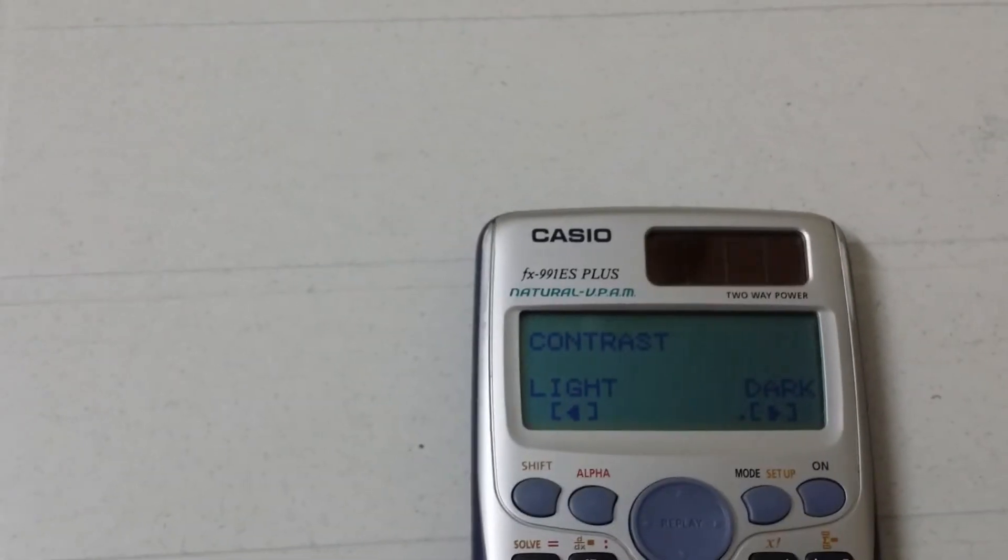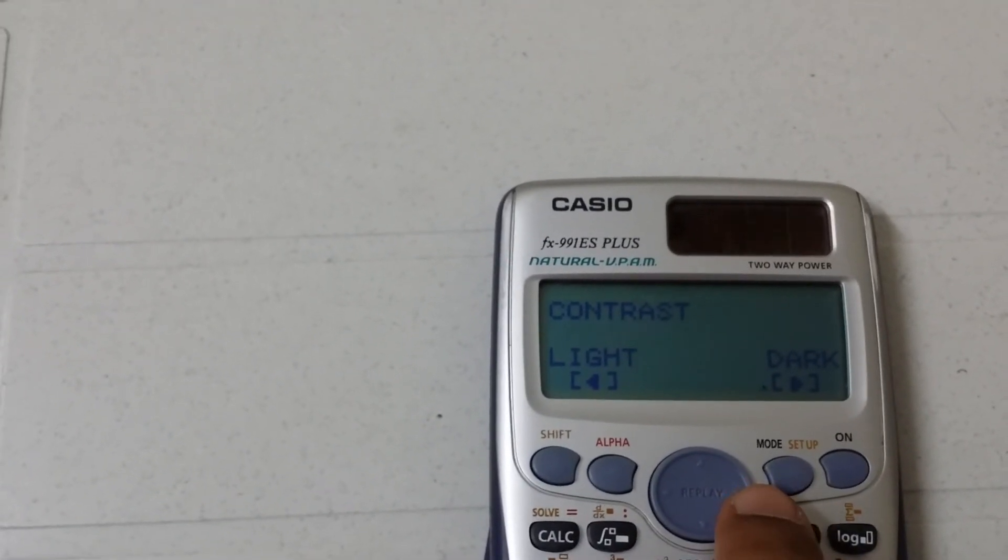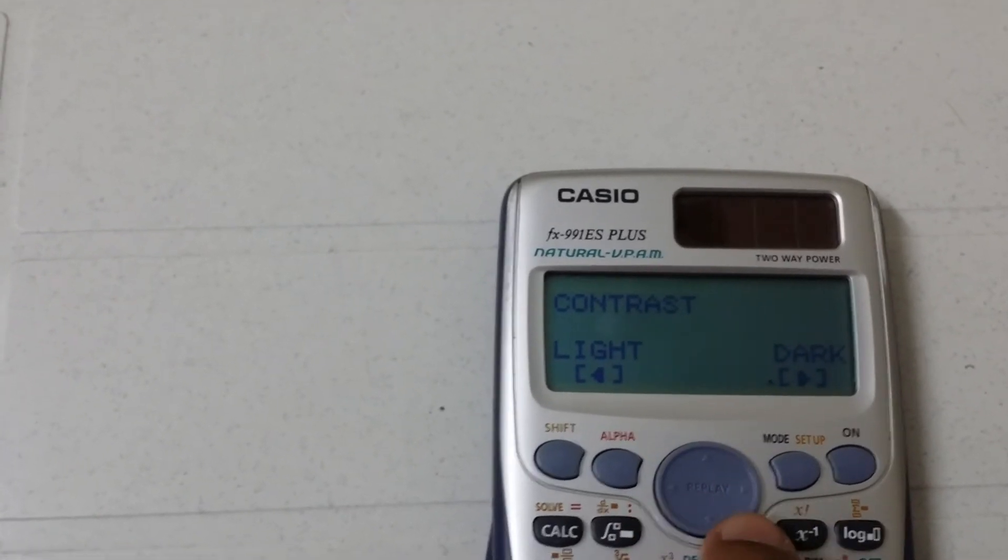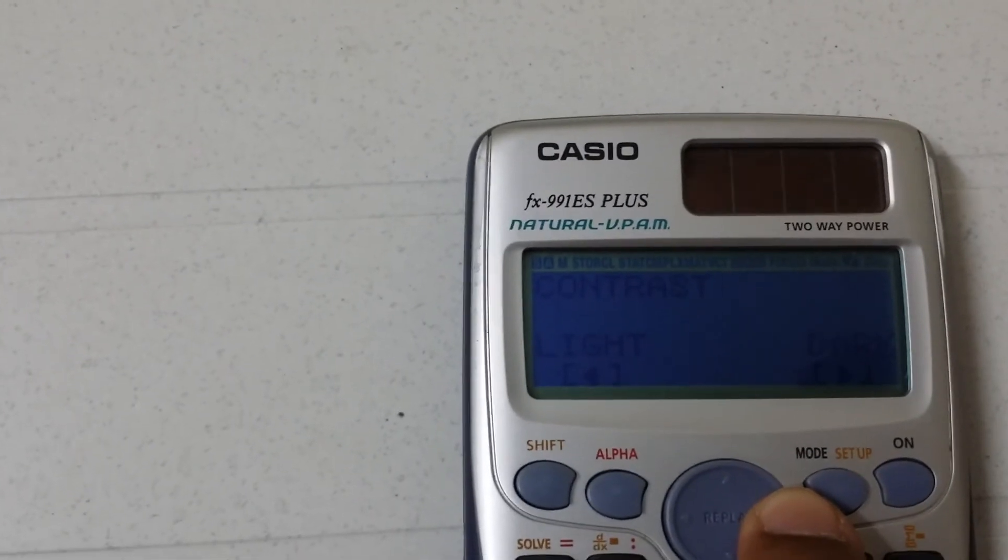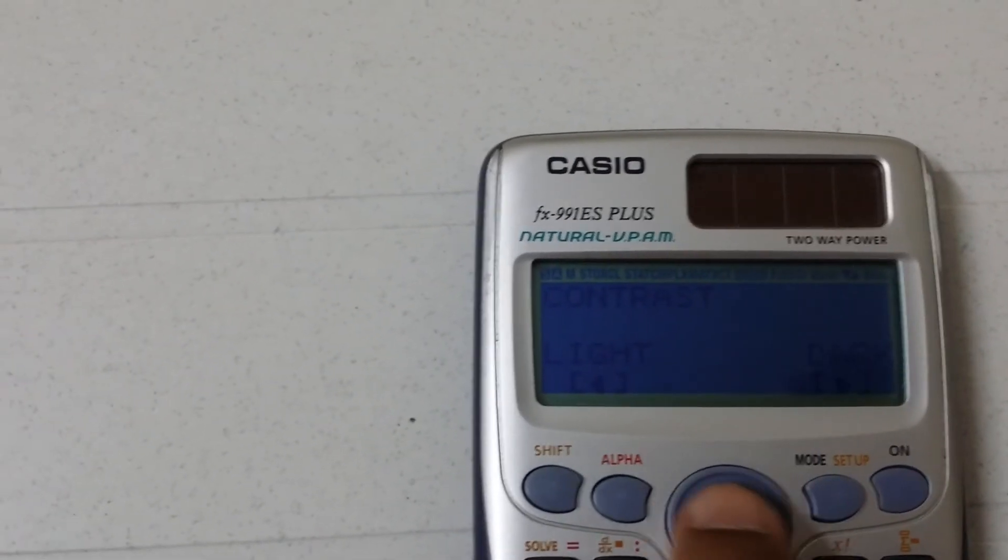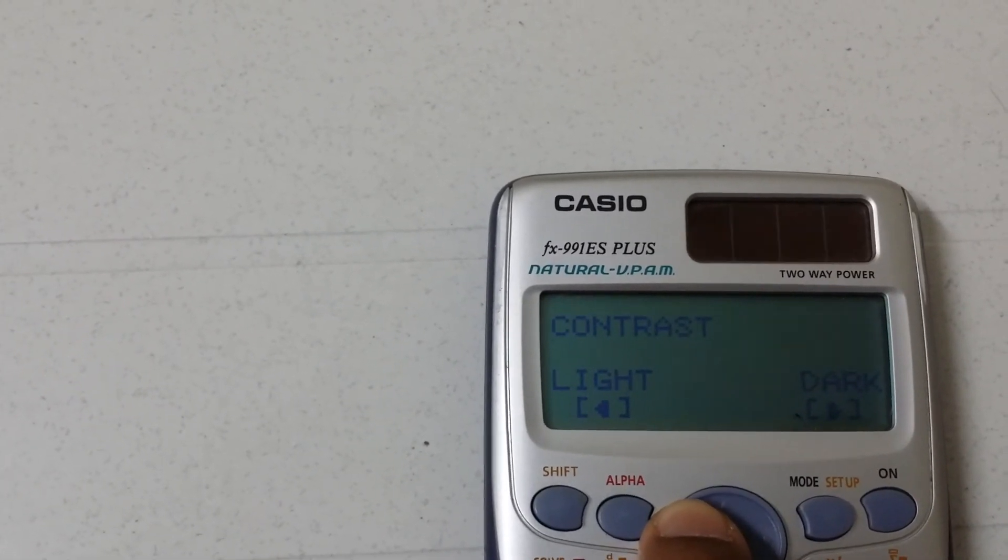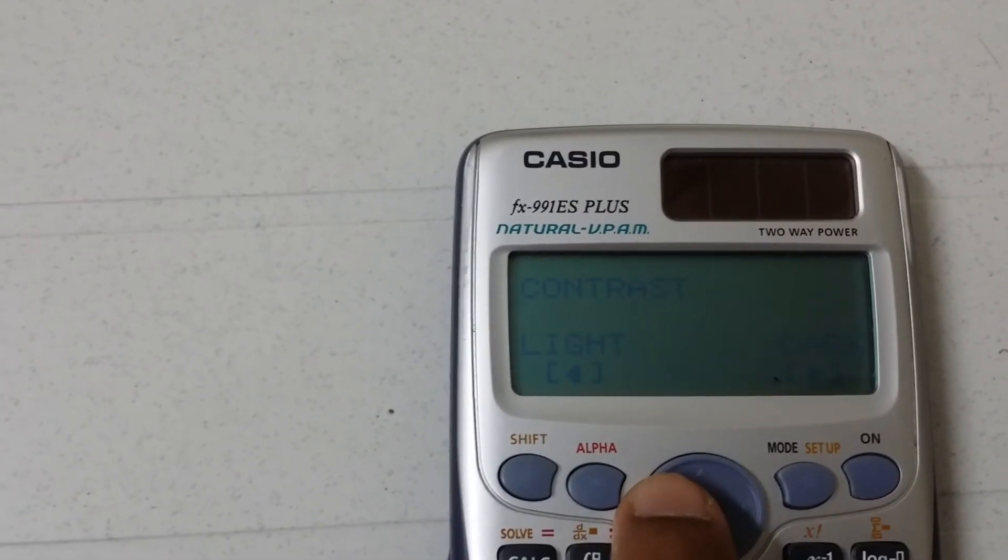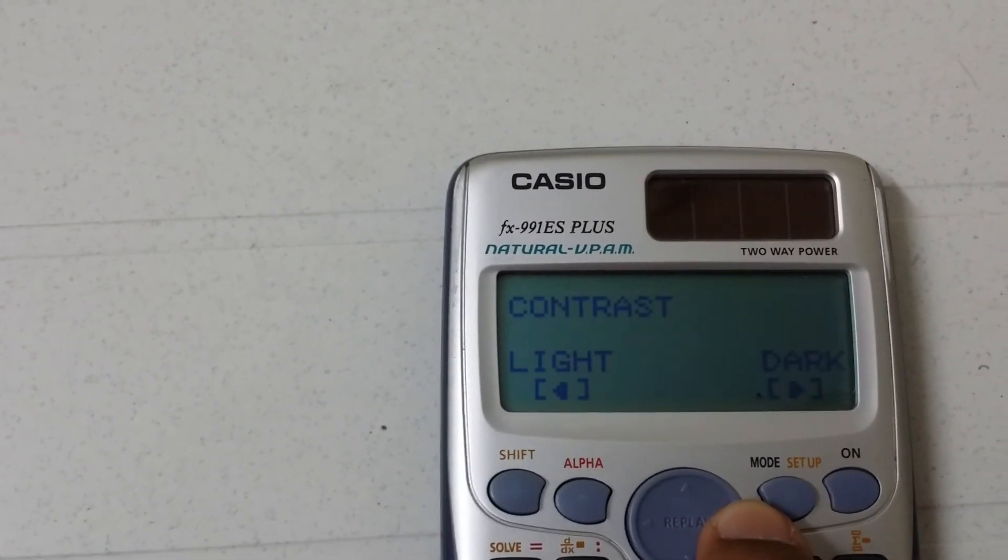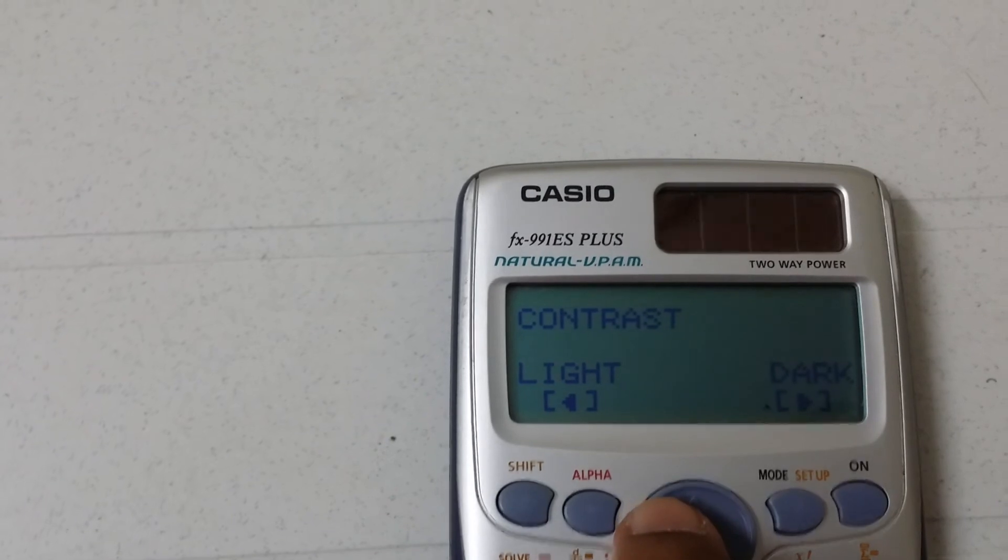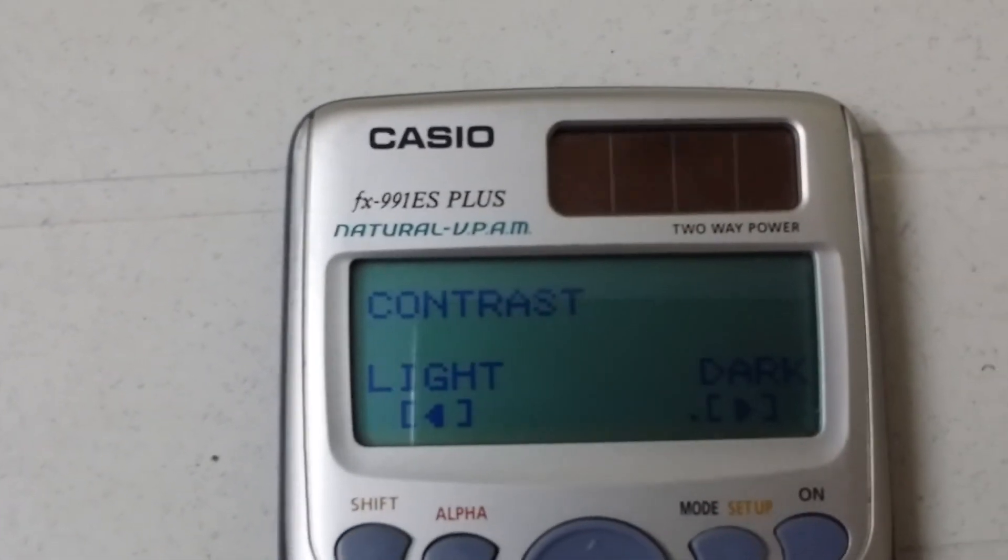And now you can see left side and right side. Right side darkens the screen as you can see, and left side makes the contrast very light as you can see. But you can use this thing in normal mode as you can see, this is normal.